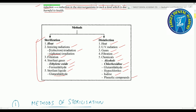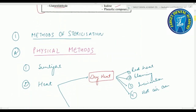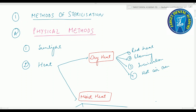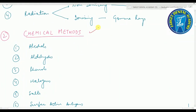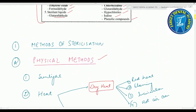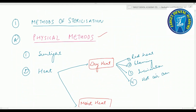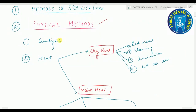We are going to discuss the physical methods and chemical methods of sterilization. Starting with the first method — sunlight — sunlight has an active germicidal effect due to its content of ultraviolet rays.